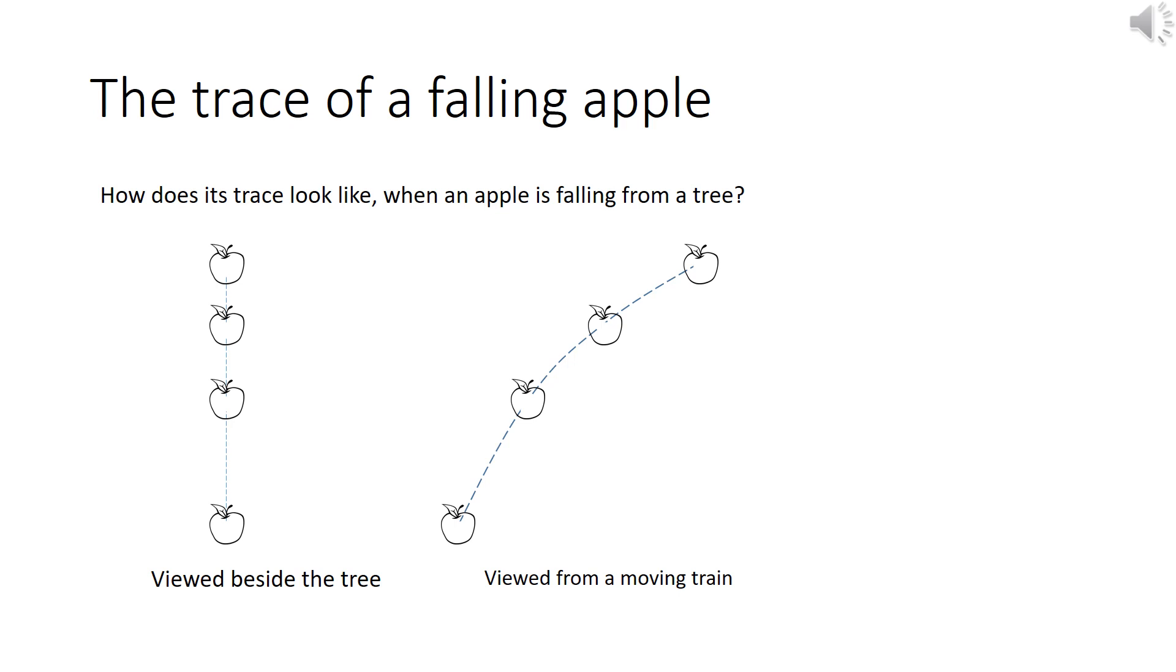For an example, let's consider the case of an apple falling from a tree. To a person under the tree, the apple is falling straight downward. To a passenger on a train passing by, the apple is falling in a curve.